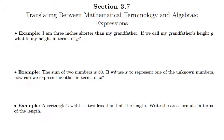The first example says: I am three inches shorter than my grandfather. If we call my grandfather's height G, what is my height in terms of G? The idea here is I'm not telling you what my grandfather's height is — I'm telling you I'm three inches less.